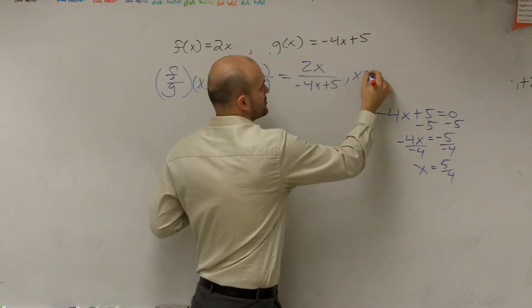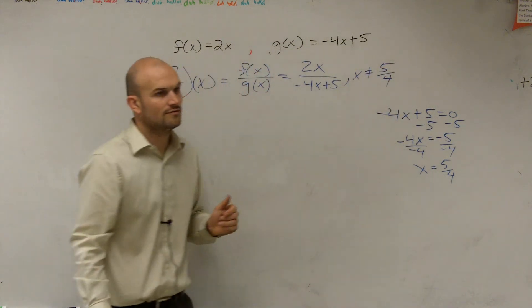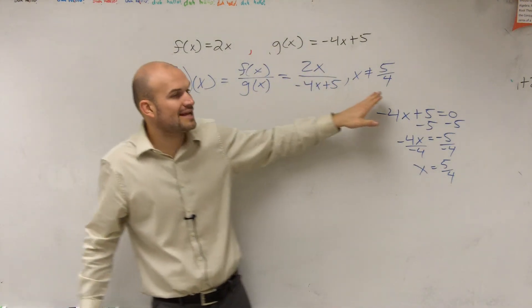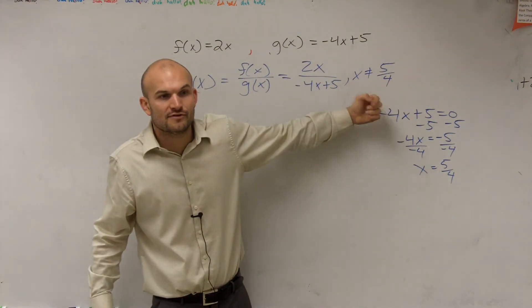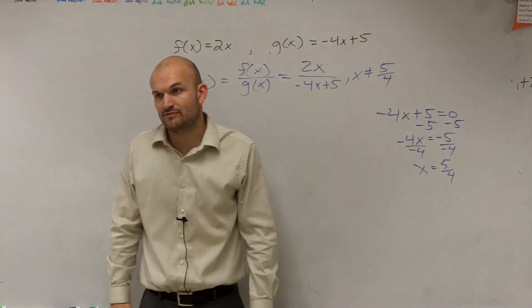So therefore, what I'm going to do is write a constraint. x cannot equal 5 over 4. So the division part's easy, right? You can't simplify it here. But you need to make sure you understand you put in the constraint, the constraint x cannot equal 5 divided by 4. It cannot.